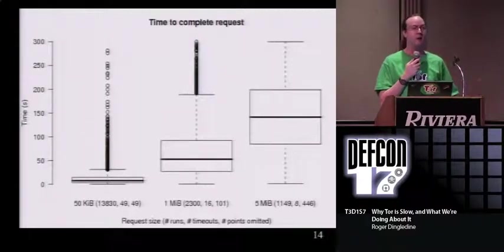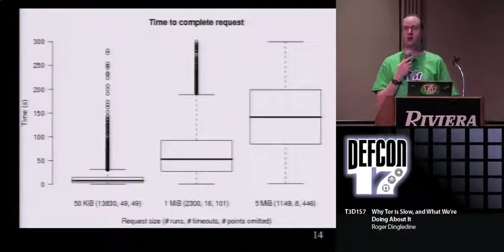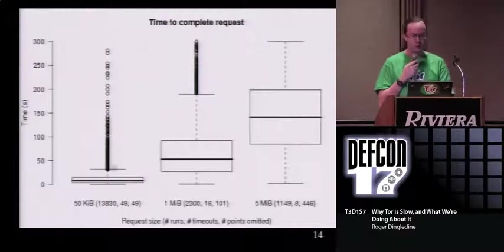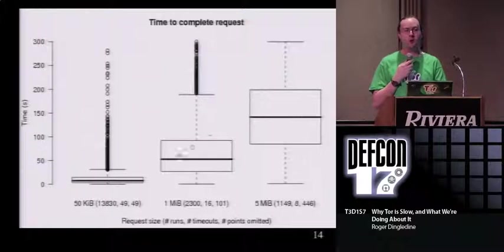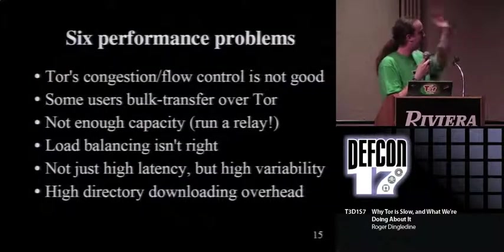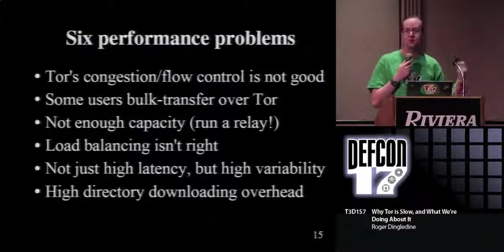These numbers are bad in both directions - eight seconds is too slow for web browsing, and 50 seconds for a larger file shows there's capacity but it's poorly used. We originally developed Tor saying let's maximize bandwidth, assuming that would give good latency too. That turns out not to be true. Providing really good bandwidth means people who want lots of bandwidth get good service, but people who want low latency don't. So we've got two problems: web browsing takes eight seconds, and bulk transfers over Tor take three or four minutes for a five-megabyte file.